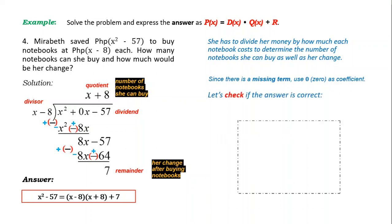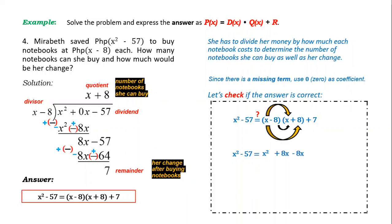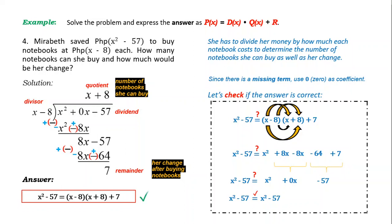Let's check. Multiply the right side: x times x = x²; x times 8 = 8x; −8 times x = −8x; −8 times 8 = −64; bring down 7. Combining similar terms: 8x + (−8x) = 0x; −64 + 7 = −57. Removing the 0x term, the right side equals x² − 57, equal to the left side. The answer is correct.